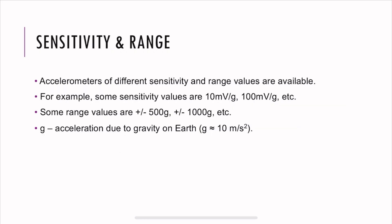There are also sensitivities and ranges of the accelerometers. They have different values. For example, some sensitivities are like 10 millivolts per G, 100 millivolts per G, and ranges are like plus minus 500, 1000. Usually you see in Gs, but you can also have a different unit, which is millivolts per meter per second squared because G is nothing but the acceleration due to gravity and we're approximating it as 10.